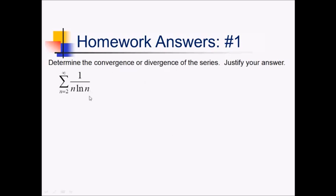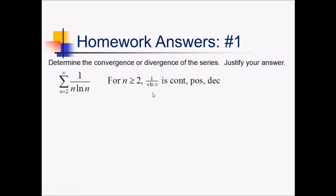On this problem, I want to determine the convergence or divergence of this series. This is one where there isn't a whole lot else that works. If you do the nth term test, this goes to zero. It's not a P-Series because we have this ln kind of muddying up the waters. So when nothing else is really working, we take a look at the integral test. Now, 1 over n·ln(n) — this is a function that at least after n greater than or equal to 2, this is continuous. It is decreasing. It's positive.